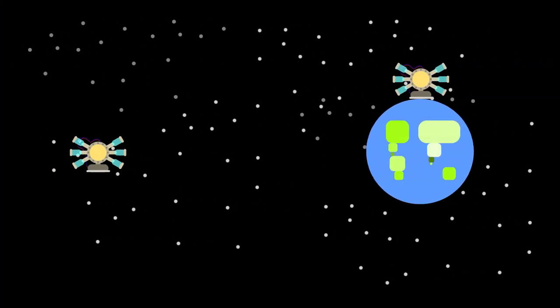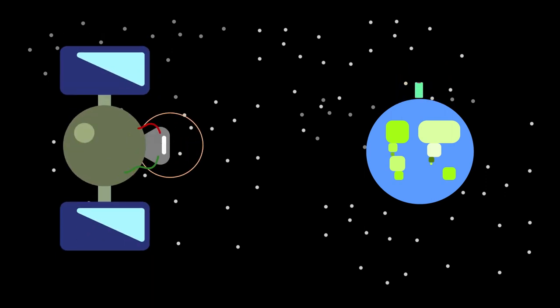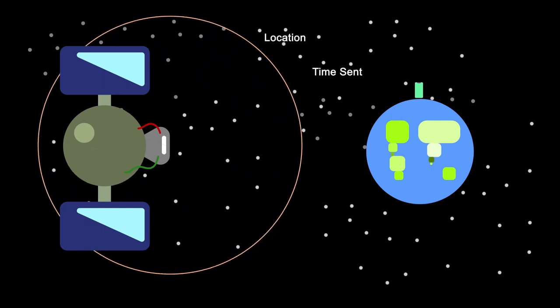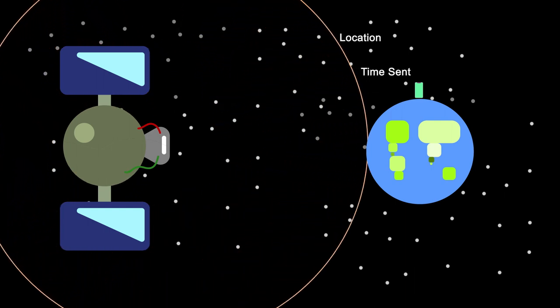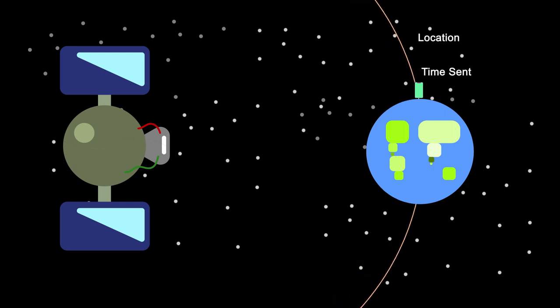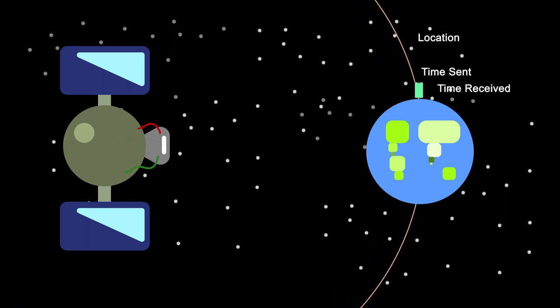GPS satellites are essentially atomic clocks in space that are synchronized with the atomic clocks on earth. All these satellites do is constantly send out radio waves containing information about their location and a timestamp of when the signal is sent. When your smartphone receives the information, it checks the time the signal was received. So now, your phone has information about where the satellite was, the time the satellite sent the signal, and the time the phone received the signal. To find out how far you are from the satellite, your phone subtracts the time the satellite transmitted the signal from the time it received the signal and multiplies by the speed of the radio wave, which is the speed of light.